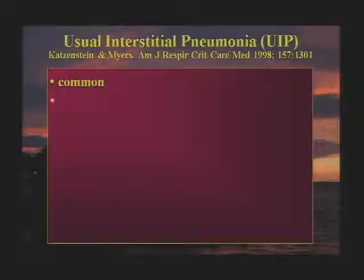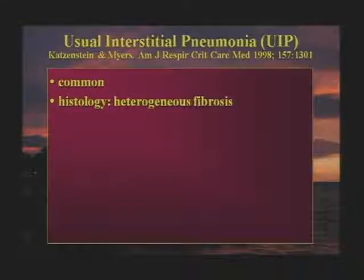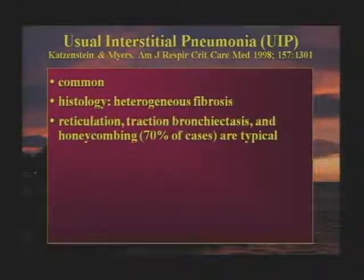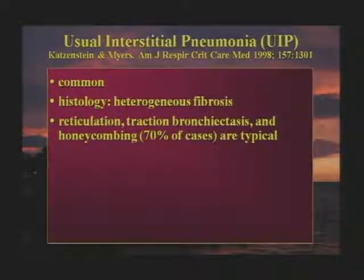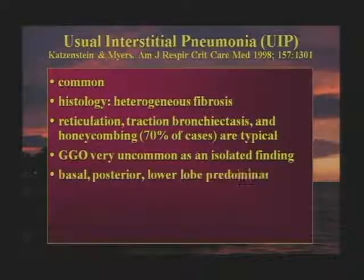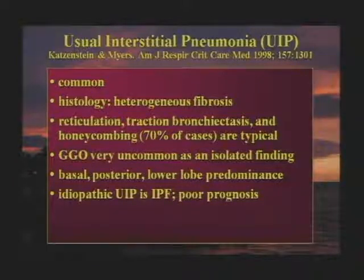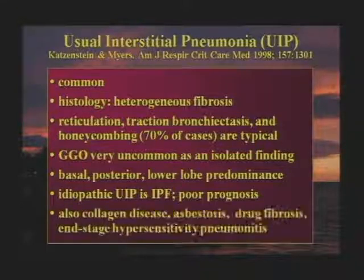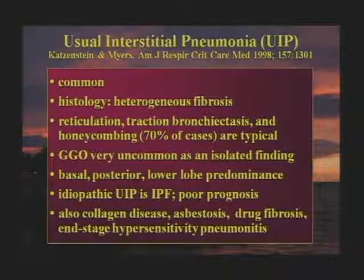Usual interstitial pneumonia is quite common in clinical practice. The histology is heterogeneous lung fibrosis. On high-res CT we see reticulation, traction bronchiectasis, and honeycombing in about 70% of cases — this combination is typical of this pattern. Ground glass opacity is very uncommon as an isolated finding in areas without fibrosis. Abnormalities have a basal, posterior, and lower lobe predominance, which is very important in diagnosis. Idiopathic UIP is IPF and has a very poor prognosis. The differential diagnosis includes collagen diseases, asbestosis, drug fibrosis, and end-stage hypersensitivity pneumonitis.